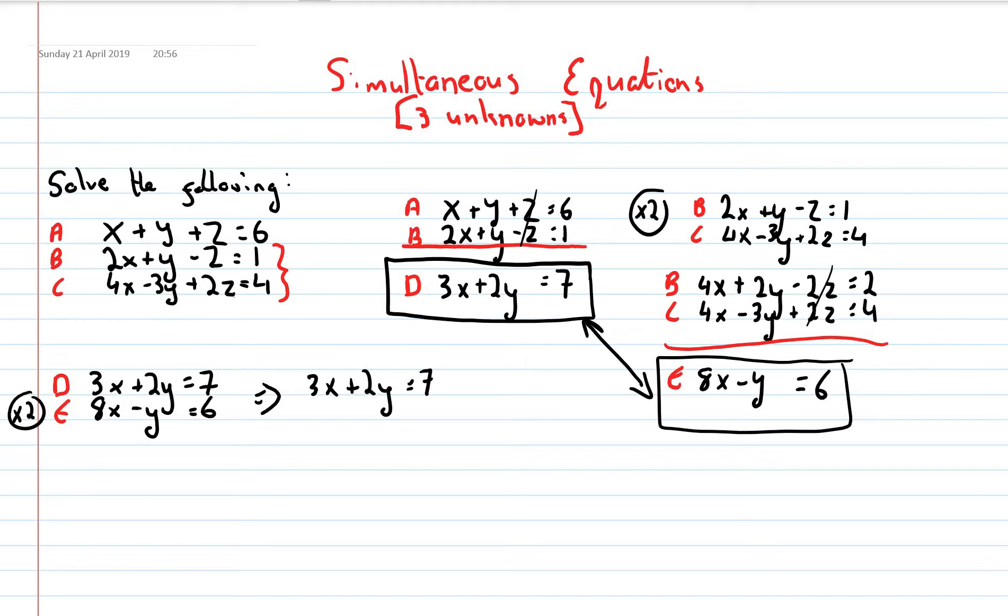So, that will give me 3x plus 2y equals 7 on the top, no change. And, 16x minus 2y equals 12. We'll add vertically, we will get 19x equals 19, so x equals 1.